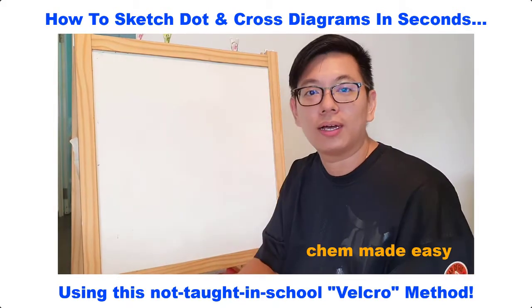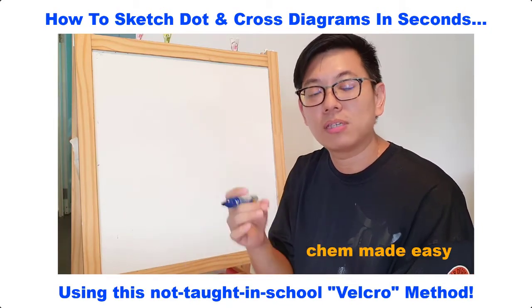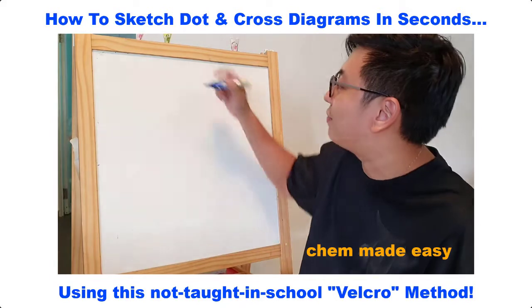I'm going to show you a simple method to sketch dot and cross diagrams for simple covalent molecules. I call this the Velcro method.